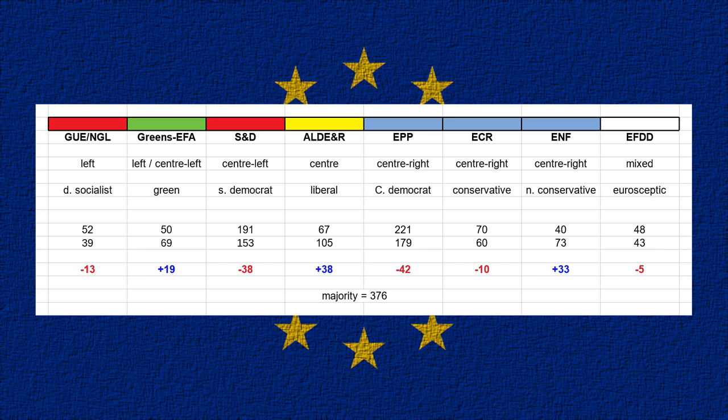I'll go through each group in more detail in a moment, but first to give a broad overview of the eight groups, starting on the left of the political spectrum and moving right. We have the GUE-NGL. GUE stands for United European Left in French, NGL stands for Nordic Green Left. These parties are mostly democratic-socialists, with a strong anti-capitalist sentiment. A lot of these parties are former or current communist parties and many use the word 'left' in their name.